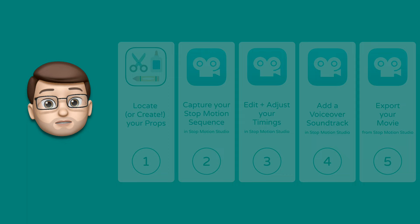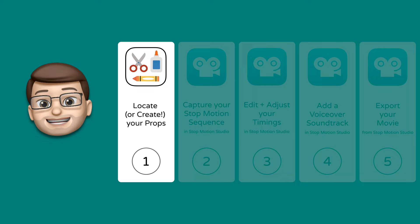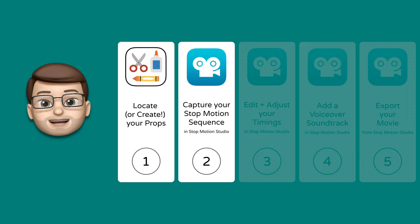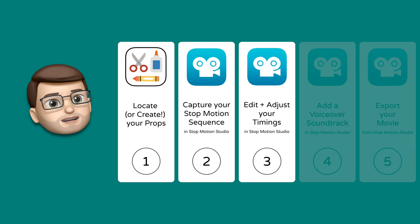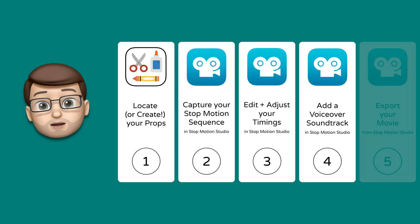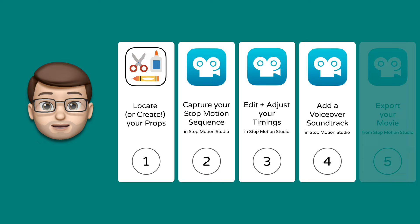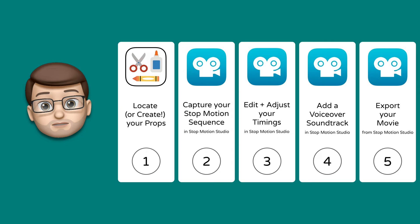First of all we're going to find some props or even make some props to use in our video — real life objects that you can gather from around you. Then we're going to start using an app called Stop Motion Studio to actually record our video. In step three we'll make changes to ensure the video flows nicely and the timings are good. In step four we'll add our own voiceover or narrative, and finally in step five we'll export our project as a video file.